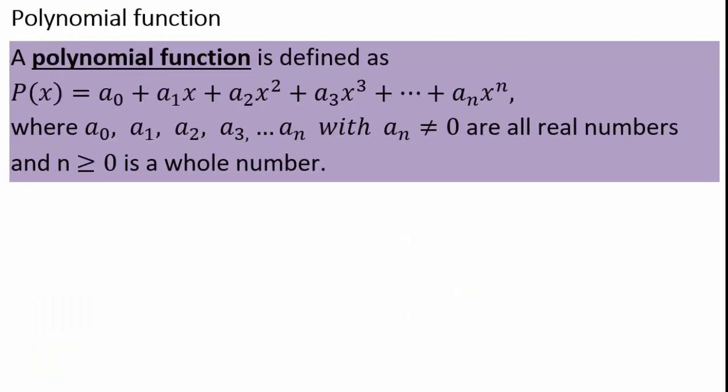A polynomial function is defined as the sum of two or more power functions. The power functions are some constant multiplier times a variable x raised to the power whole number 0, 1, 2, 3, and so on. So when you take a whole bunch of power functions of those types and you add, subtract, or multiply together, what results is a polynomial function.